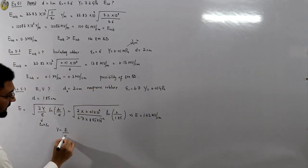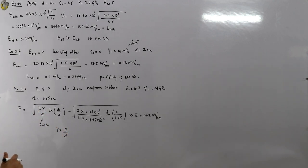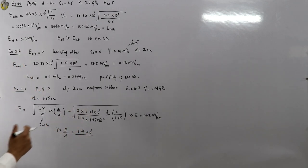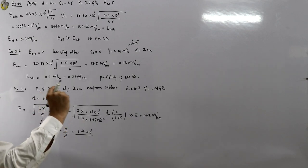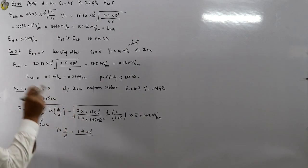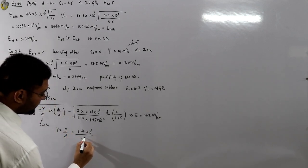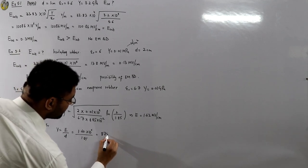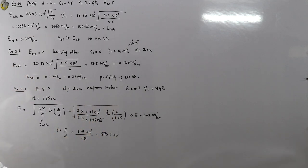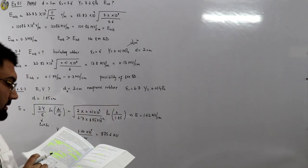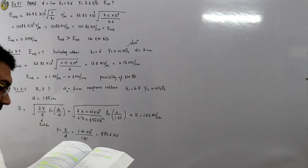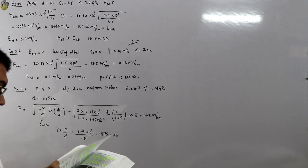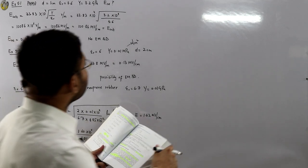The voltage is V = E × d. Using E = 1.62 × 10^6 V/m and d = 1.85 cm (the compressed thickness, since breakdown occurs at that point), the voltage comes out to be 875.6 kV. This is the electric field and voltage required for breakdown in Example 5.3.